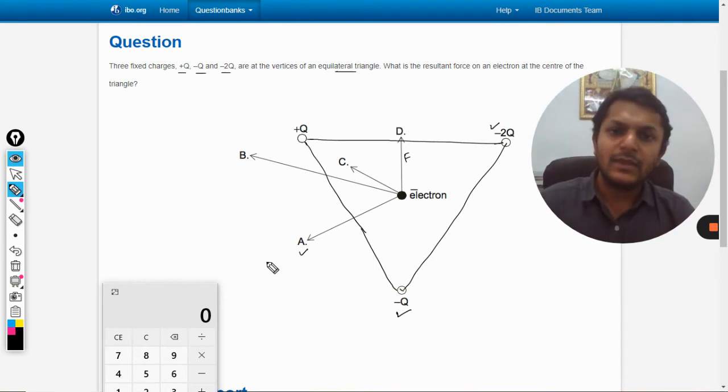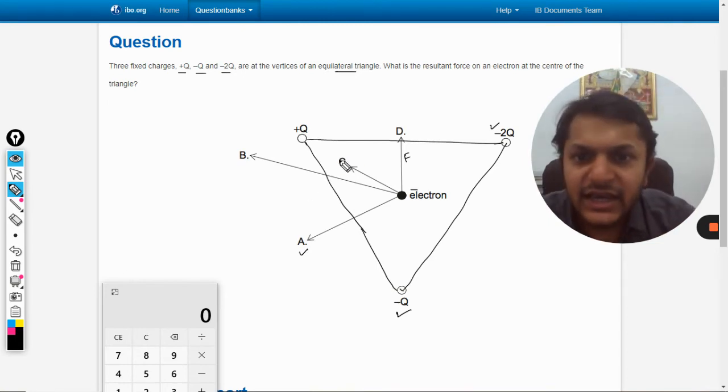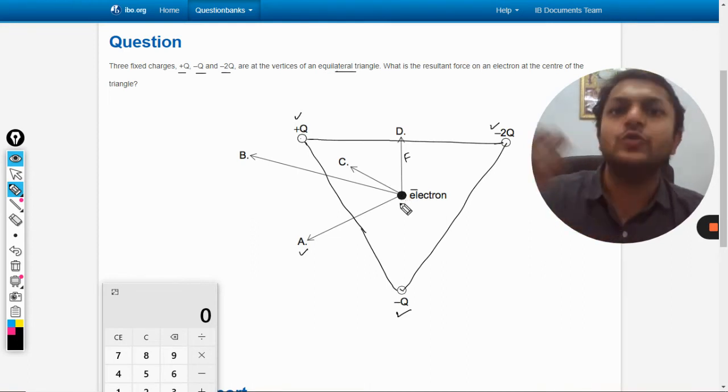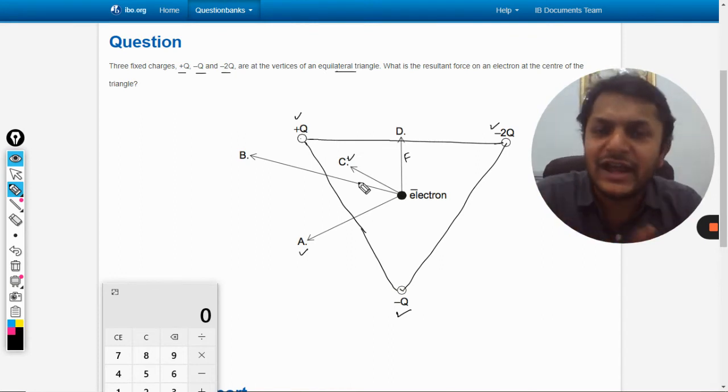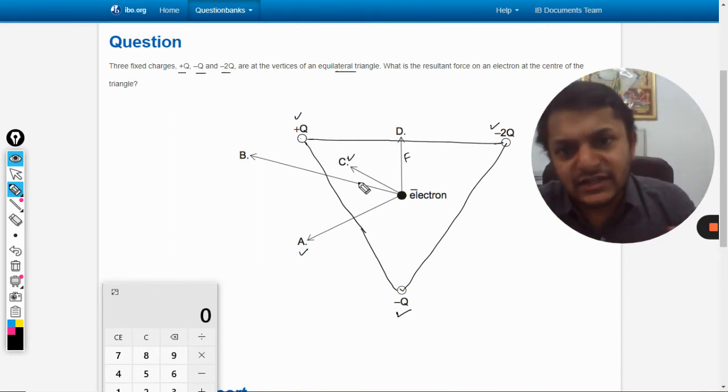What about C? This positive charge is now going to attract the electron towards itself. So C is showing the force of attraction between the positive charge and the electron.